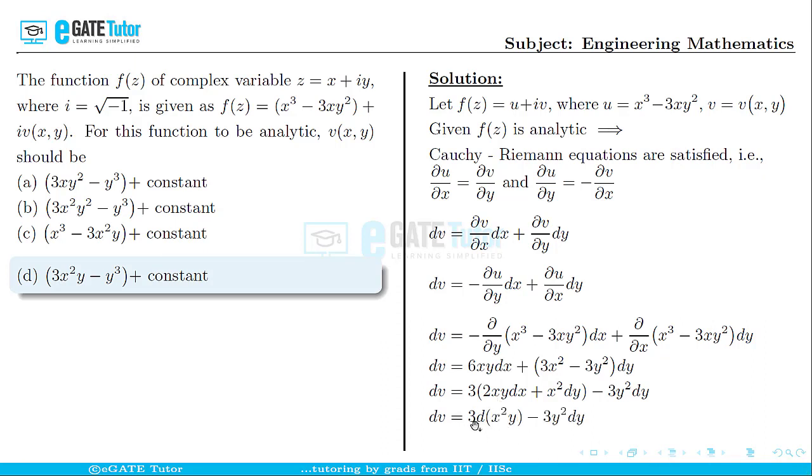That is, dv = 3·d(x²y) - 3y² dy. When you apply the uv rule for this particular term and expand that, you will get 2xy dx + x² dy. Now when we apply the integration on both sides, we get v = 3x²y - y³ + constant, which matches with option d.